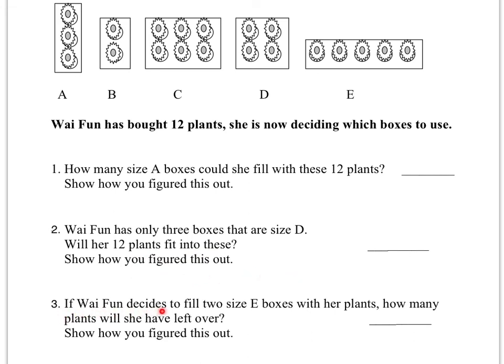Number 3, if Wai Fun decides to fill two size E boxes with her plants, how many plants will she have left over? You have to think 2 times how many plants fit into size E box equals a certain number. Then you're going to subtract that number from the 12 plants that she has. And whatever is left over is what you put your answer here. And show your math below.